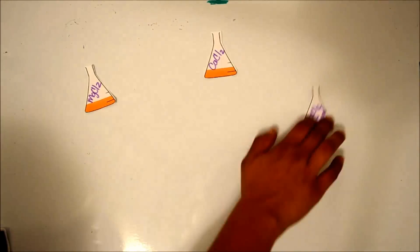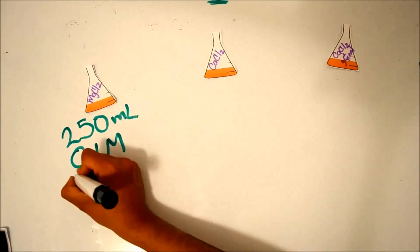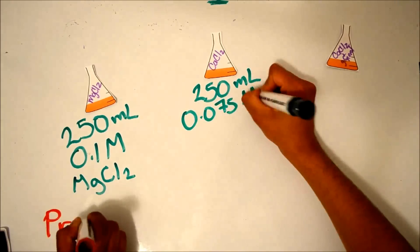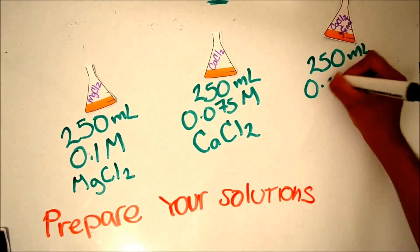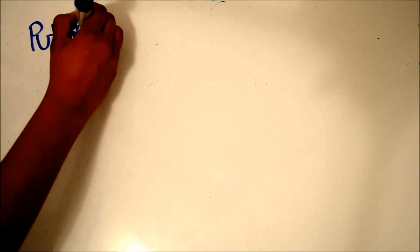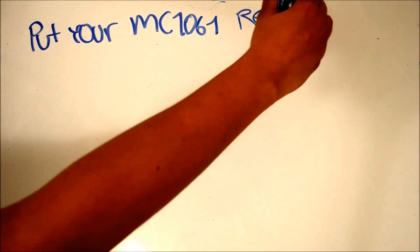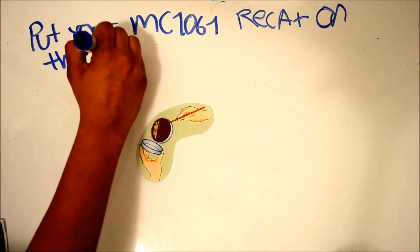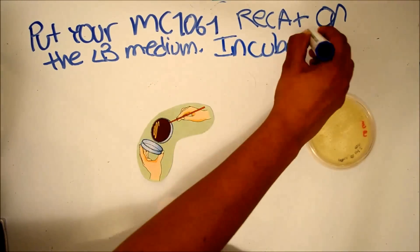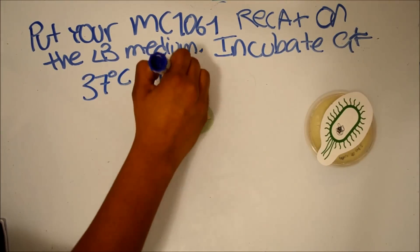Prepare the solutions of calcium chloride, magnesium chloride, and calcium chloride with glycerol and autoclave them. Place the cells MC1061-REC-A-Plus on LB medium and incubate at 37 degrees overnight.